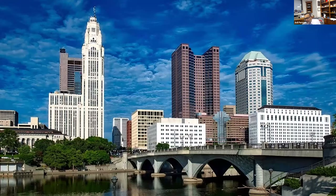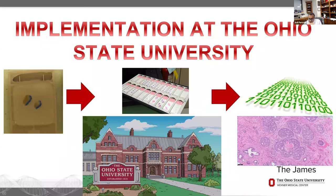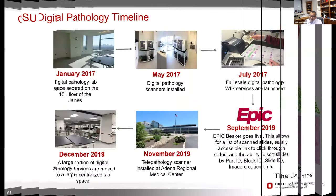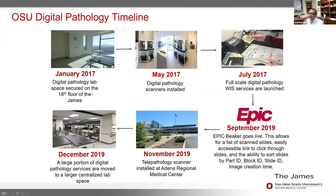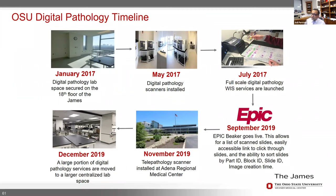I'm going to move on to focus on what we've done at Ohio State and how we've implemented digital pathology. We started around 2017, when we secured funding to buy scanners. Initially the funding was focused on cancer cases — we wanted to digitize a large number for cancer research. We installed our first set of scanners in the cancer center, but not in the histology lab, so we had to physically move the glass slides to that location, scan them, and make them available for primary diagnosis.